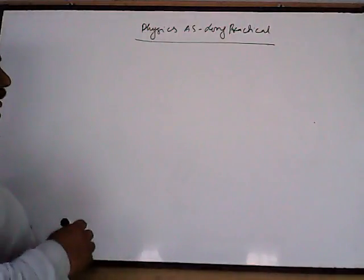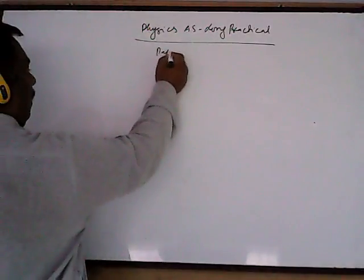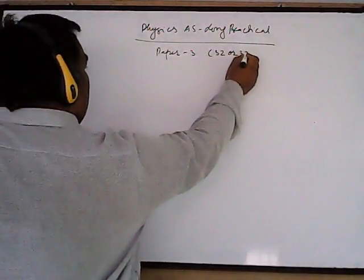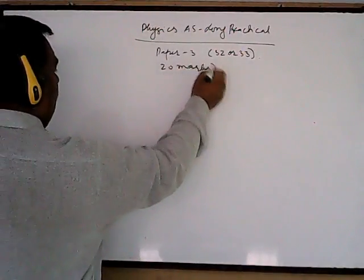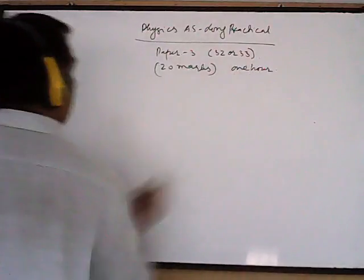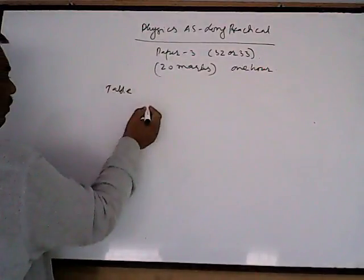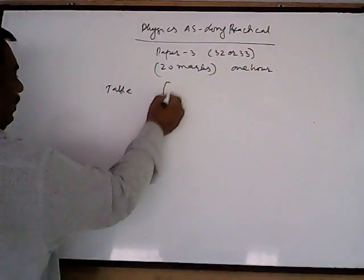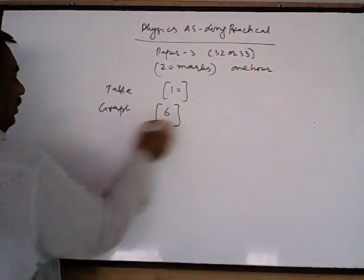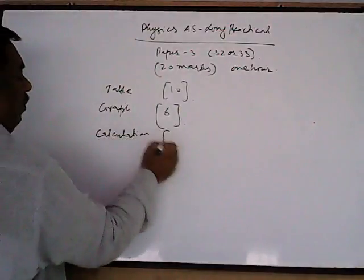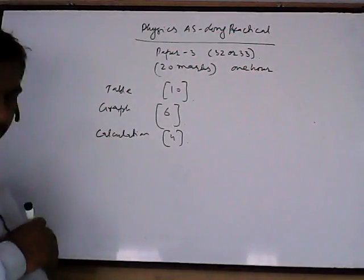We will discuss the AS physics long practical — Paper 3. This comes in physics paper 3, either question 32 or 33, and it is a total of 20 marks, one hour long. The main things for the AS long practical are: first, the table and setting of the apparatus, which is usually 10 marks; graphical work — graph, gradient, and y-intercept — which is 6 marks; and calculation, which is 4 marks.